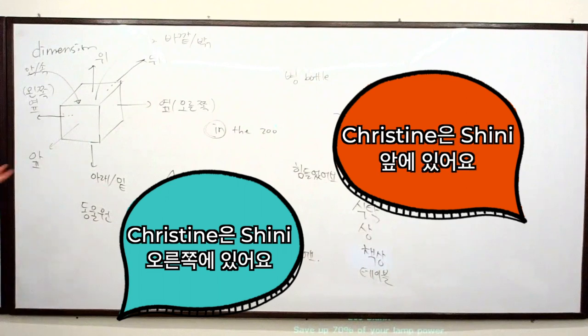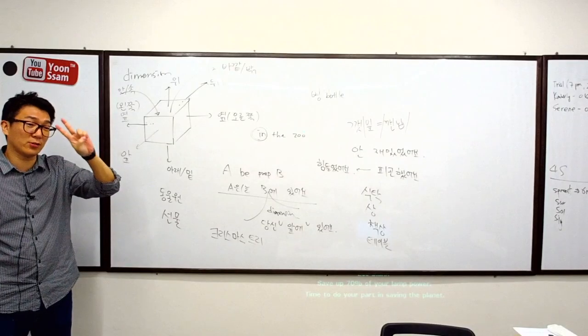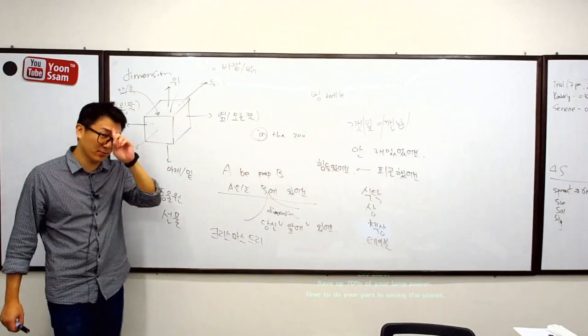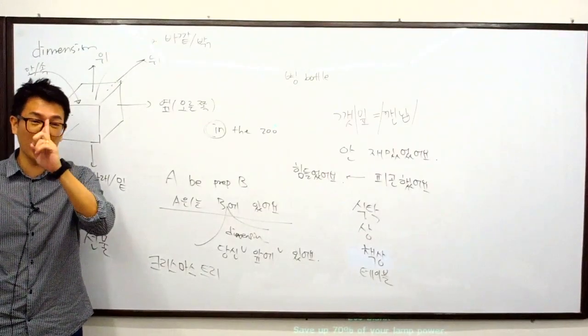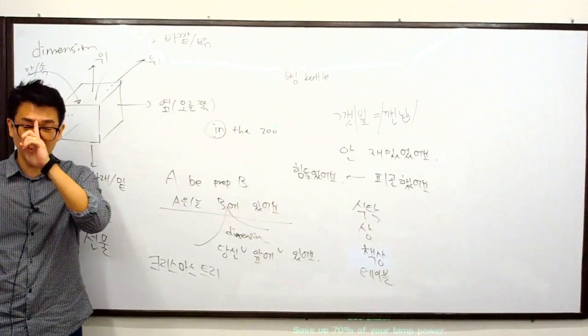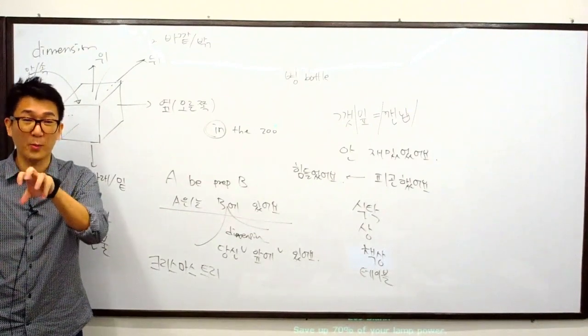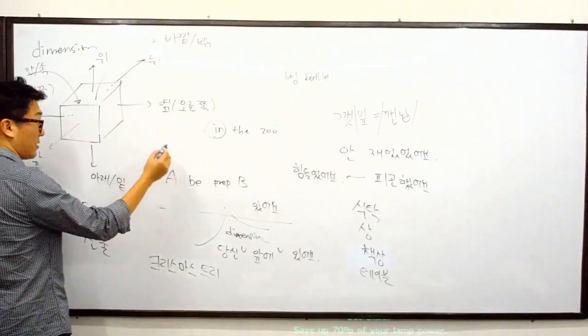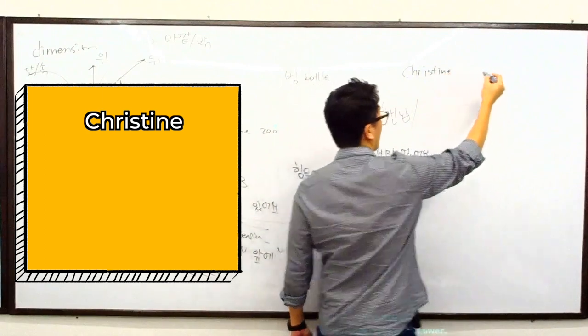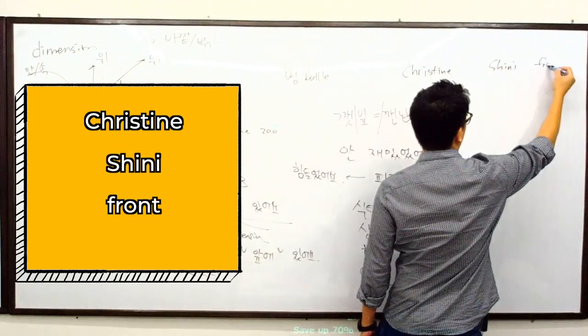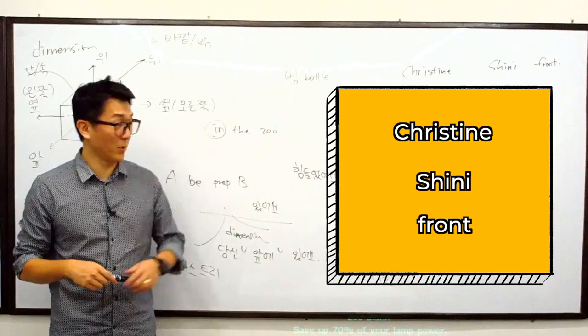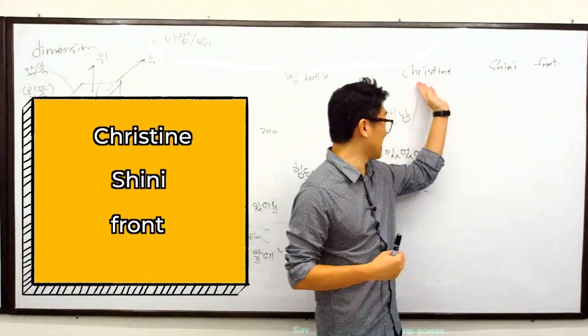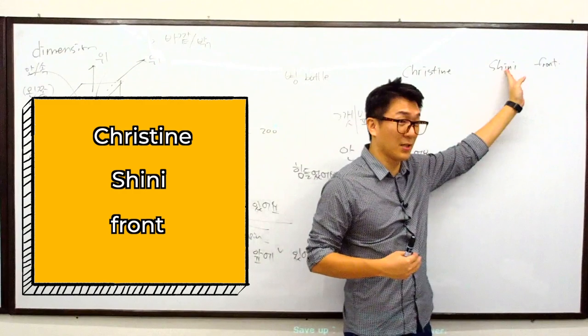So 신이는 크리스틴 왼쪽에 있어요. 크리스틴는 신이 오른쪽에 있어요. This is both the same statement. There are two things you need to be very clear: first, you need to know what you are going to talk about, what is the center of the sentence, what is the topic of the sentence. For example, I'll remove this and then I just give you this way: Christine and then 신이 and front. Let's say you're given this information. Let's say we interpret this one: Christine's in front of 신이. Then how do you say?